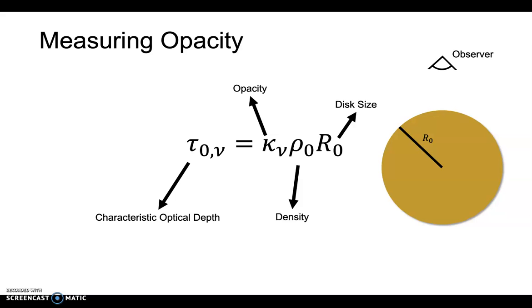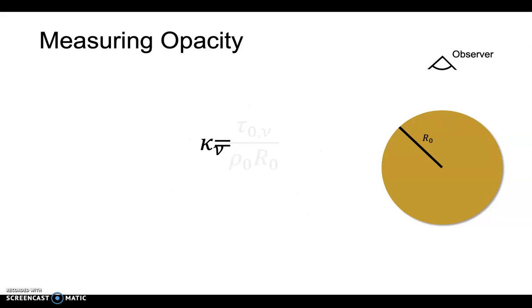I will show you that we can easily measure the disk size and the characteristic optical depth from resolved images. As for rho_0, we can impose that disks cannot be too massive, or else it becomes gravitationally unstable. With these constraints, we can measure the opacity to within a factor of a few.